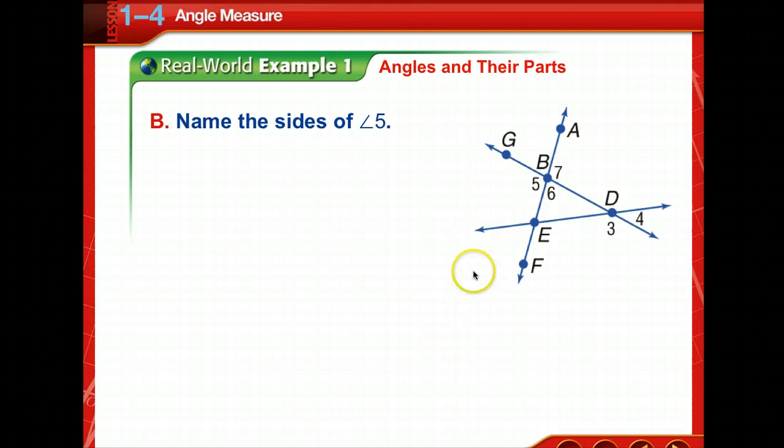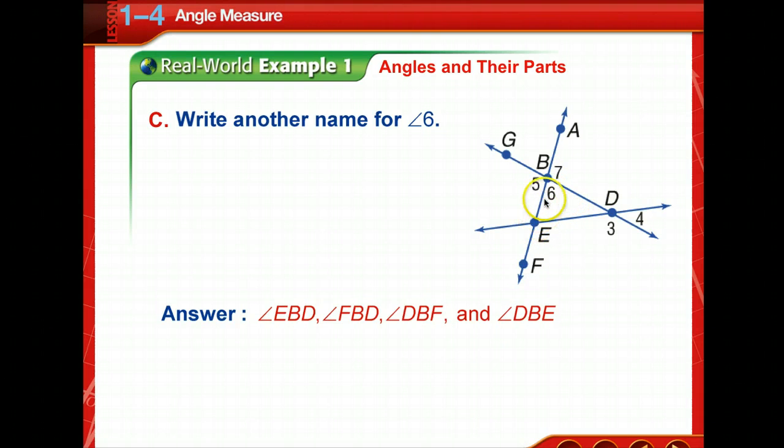We're asked to name the sides of angle 5. So first of all, let's look at angle 5. So here's a side, here's a side. So ray BG, ray BE, or we could call it ray BF. Both of those are legitimate answers. We're to write another name for angle 6. So let's locate angle 6. So this is the angle we're talking about. So we could call it angle EBD, we could call it angle FBD, we could call it angle DBF, or we could call it angle DBE. Either one of those answers are correct. You don't have to list all four, but there are four different ways we could name that angle.